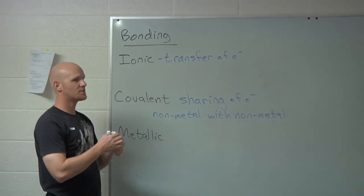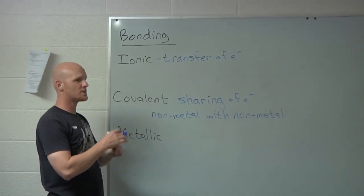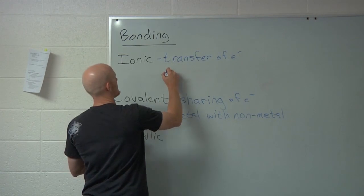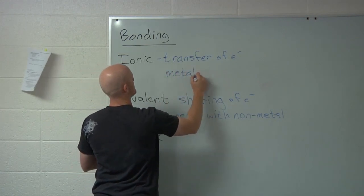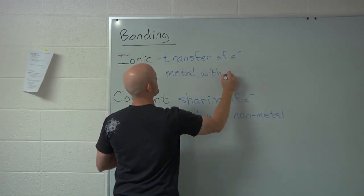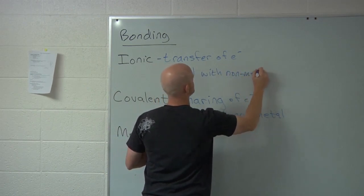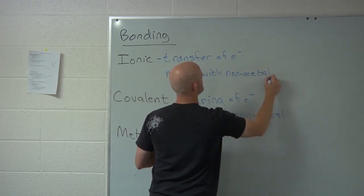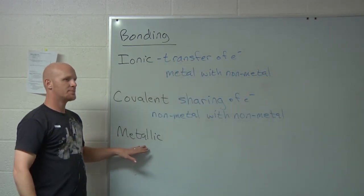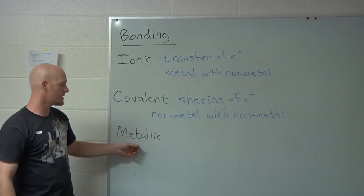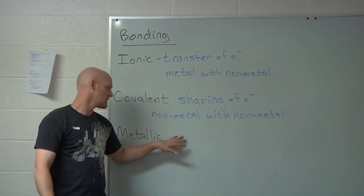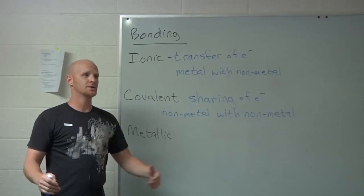Whereas in ionic bonding, what kind of elements are we looking for? Metal bonding — yeah, metal with a non-metal. The last type is metallic bonding. We're not going to talk a whole lot about metallic bonding, but in metallic bonding you'll see pretty much a metal and a metal.